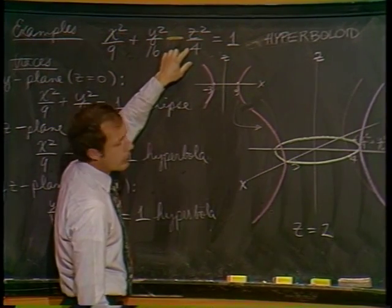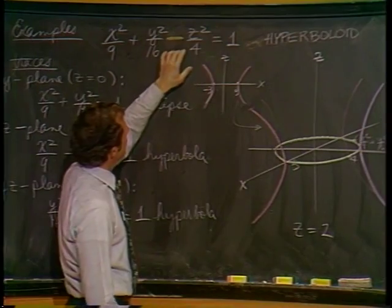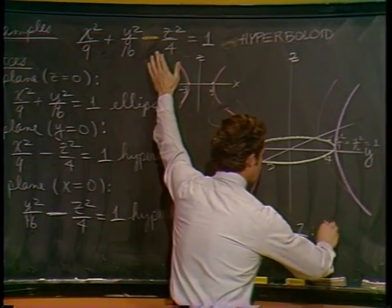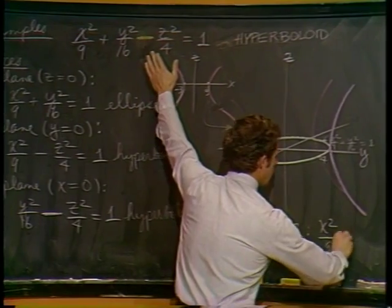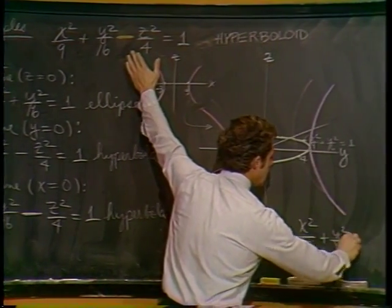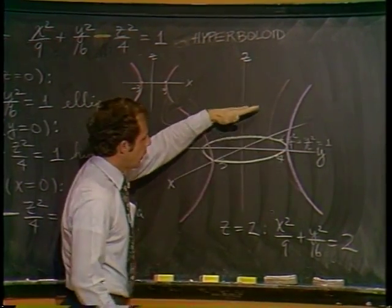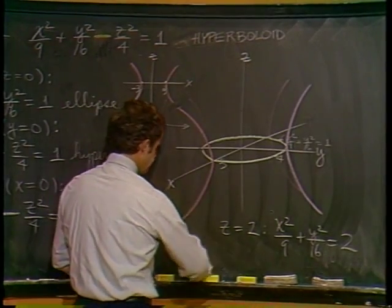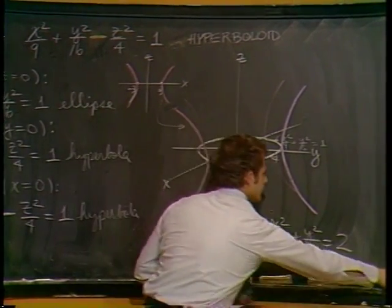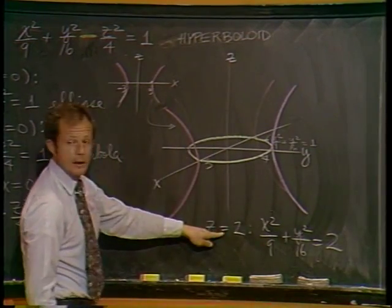If I put z equals 2 in here, z squared over 4 will be 1. Add it to the other side, I'll get x squared over 9 plus y squared over 16 equals 2, and not just a 1 as we had here.